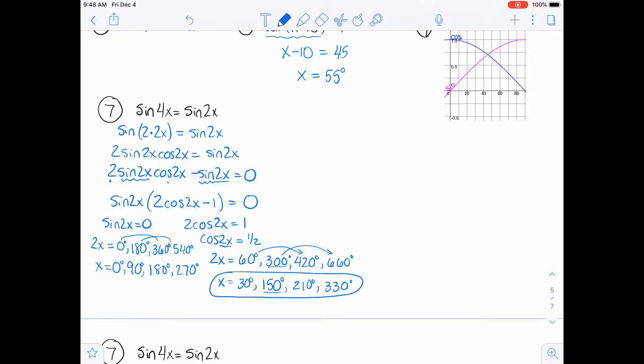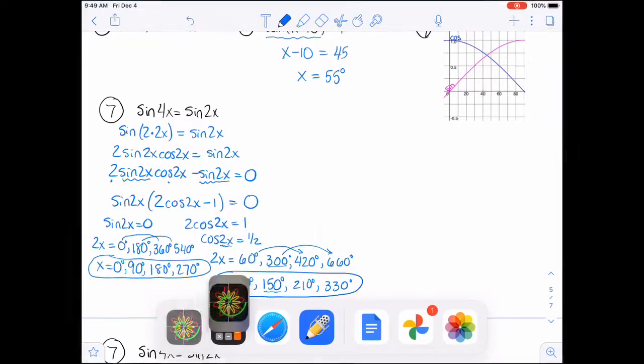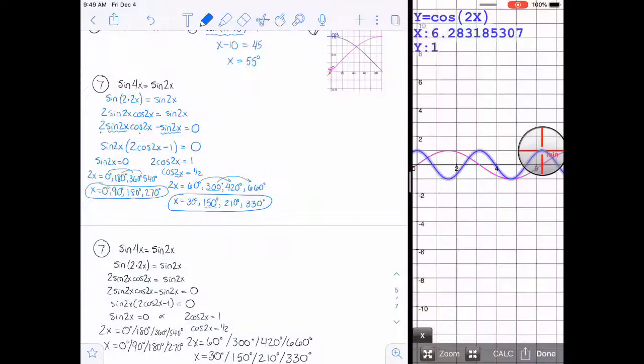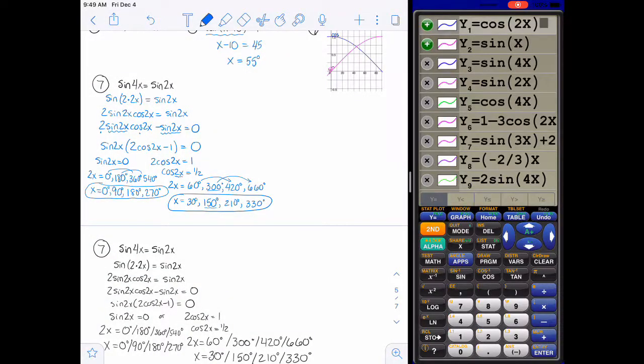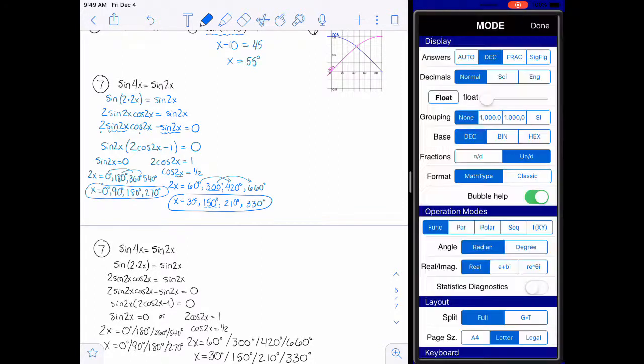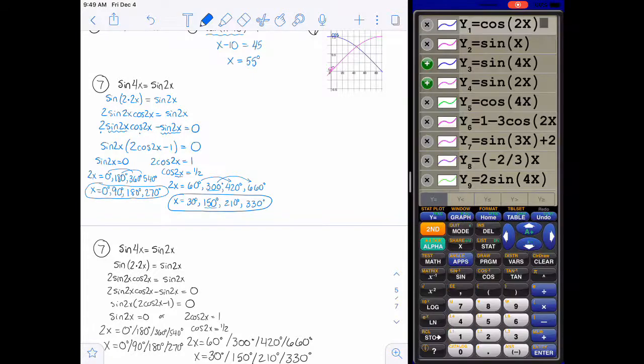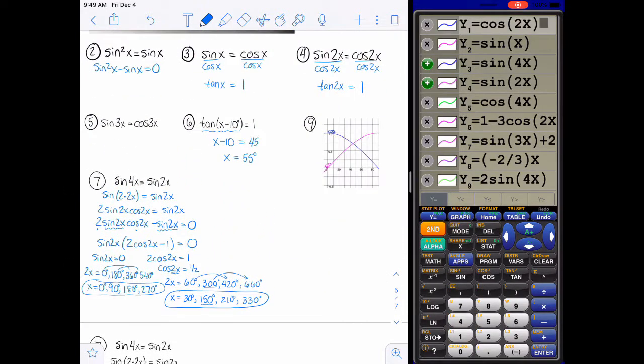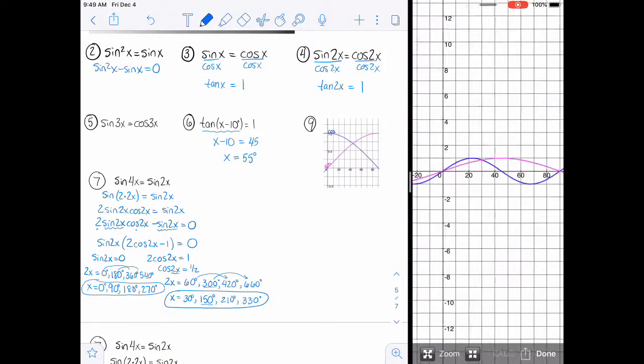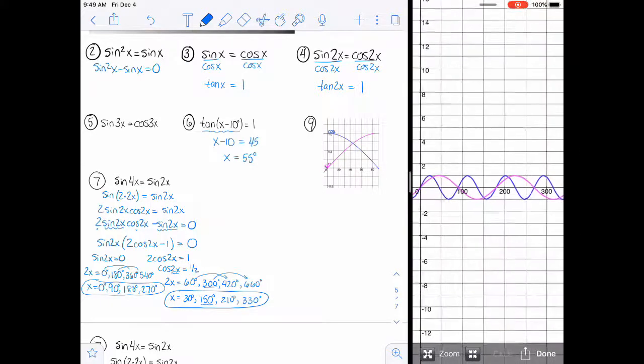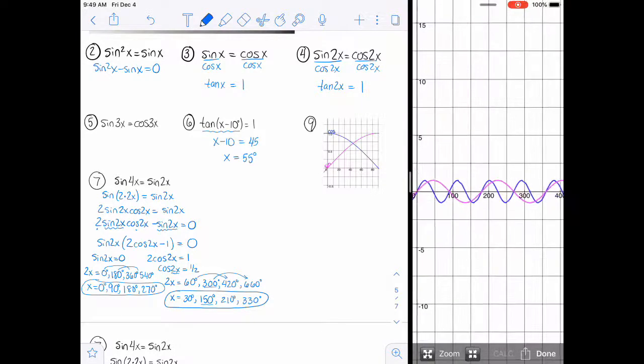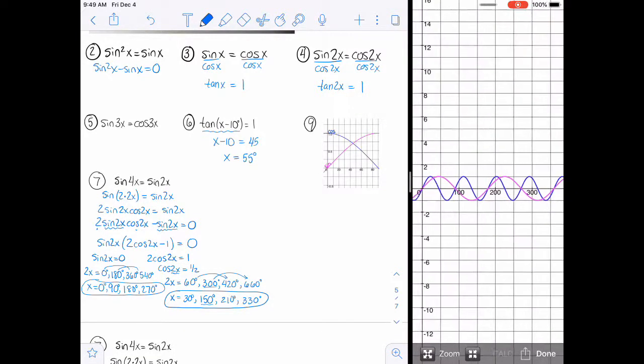So I do want to look at a graph of that as well. So that you can see all of these different things. So it's the sine of 4x and the sine of 2x. And I do want to be in degree mode for this one as well. But you can see then lots of different intersections. So there's the one at 0. Here's the one that's at 30, which is right here. There's one there that's at 90.